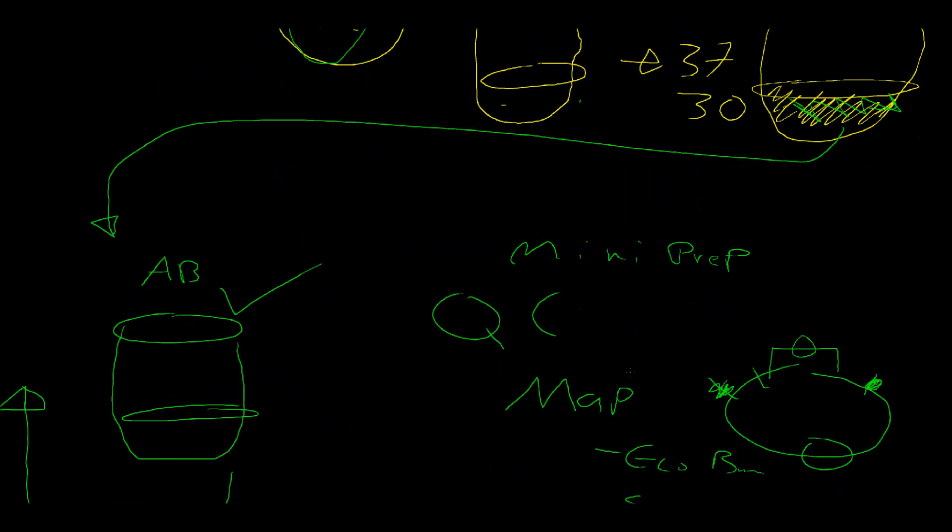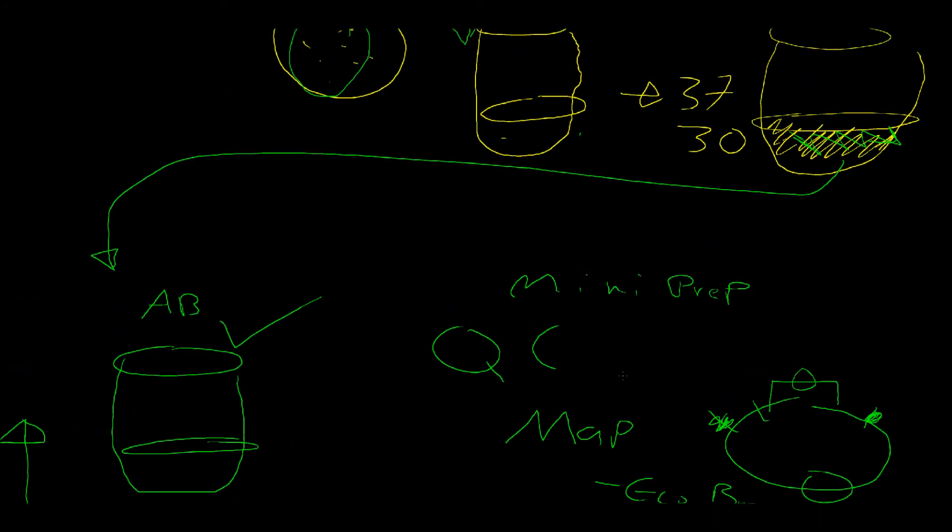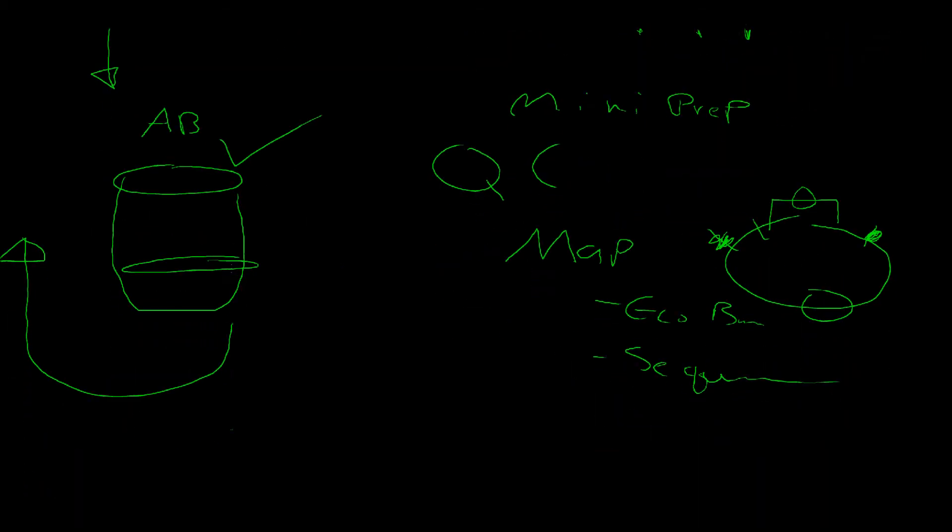And then we can mini prep that. The mini prep just consists of pelleting, resuspending, lysing, neutralizing and crashing out all the junk. Spinning it on a mini prep column. Washing it off a few times. Drying it and eluting it. We end up with a tube full of DNA. Which then needs to get QC'd. We QC our tube of DNA by mapping it. Then sequencing it. After it gets QC'd, it gets the check. And now we have ABDC.